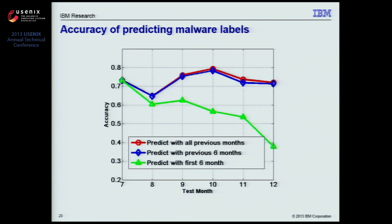We divide the malware data into training and testing sets. We use each month between July and December as our test set, and choose training sets under three scenarios. In the first scenario, we use every month from January to one month before the test month as training data, accumulating all historical malware information. In the second scenario, we only use the most recent six months prior to the testing month as training data.